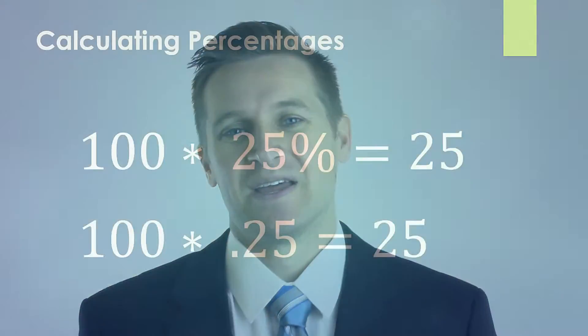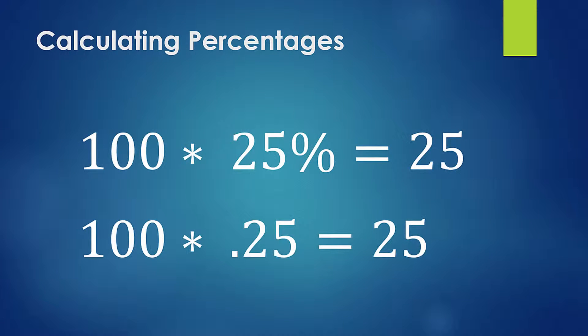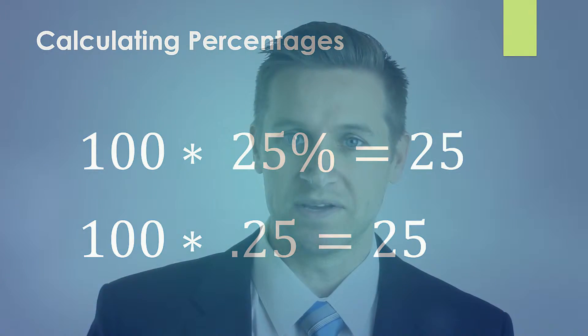Before we get started, I'm going to talk about a math trick that a lot of accountants use, and it has to do with calculating percentages. Accountants have to calculate a lot of percentages in their day-to-day job, so let's review the basic percentage equation. If you take the full value of something and multiply it by a percentage, you get the percentage value of that thing. For example, 100 times 25% equals 25.